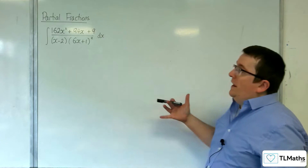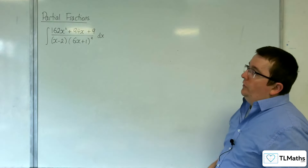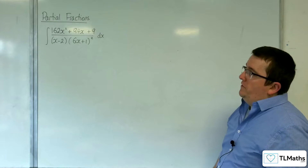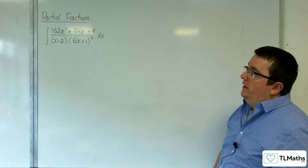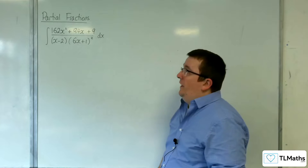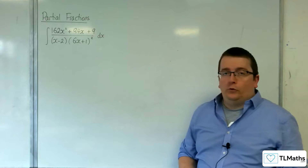In this video we're going to be integrating 162x squared plus 94x plus 9 over x take away 2 times 6x plus 1 squared.